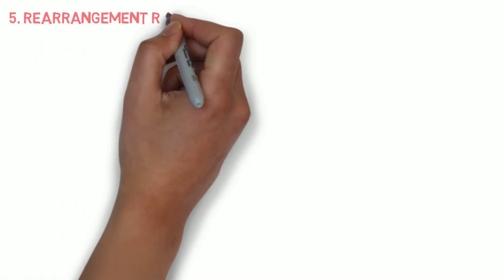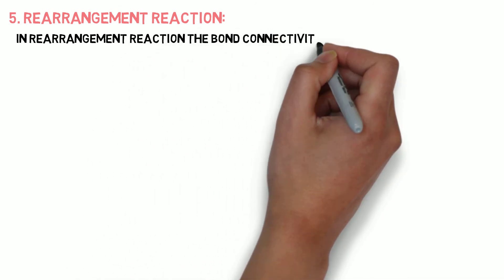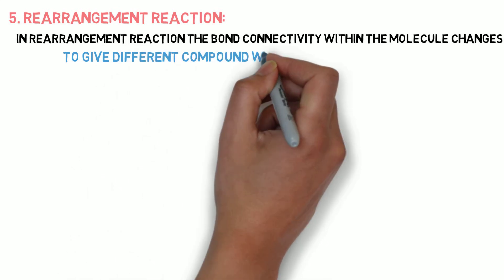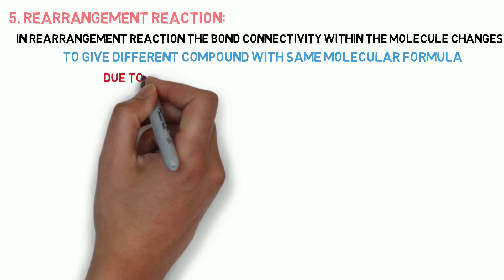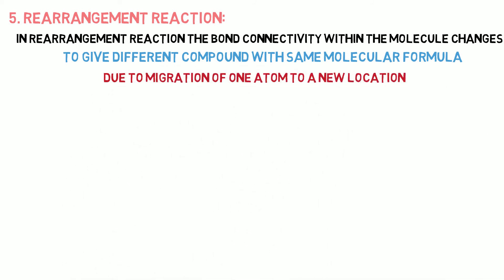Then rearrangement reaction. In rearrangement reaction, the bond connectivity within the molecule changes to give different compound with the same molecular formula. This happens due to the migration of one atom to a new location.